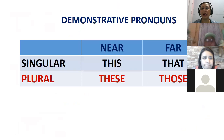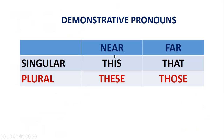Here I have a chart that summarizes near and far. Singular near: this. Singular far: that. Plural near: these. Plural far: those. I like this chart because it relates singular/plural with near/far.